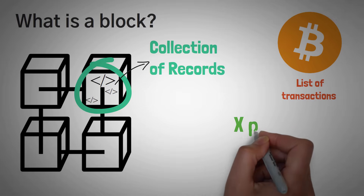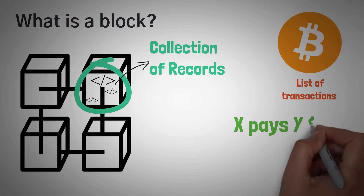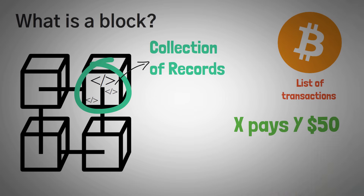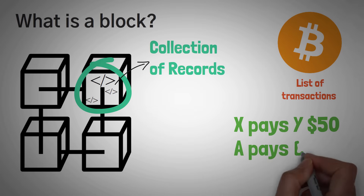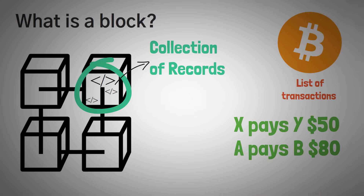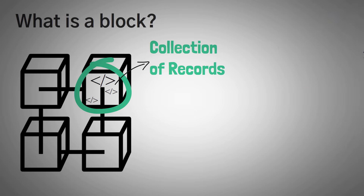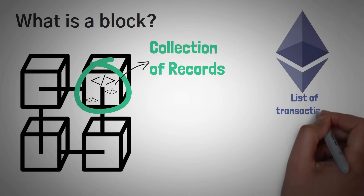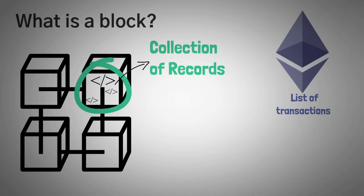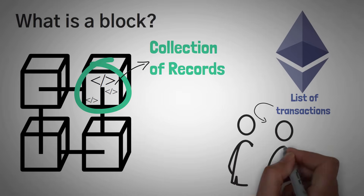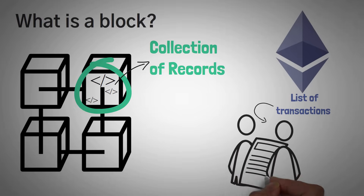For example, it might look like this: X pays Y $50, A pays B $80, and Y pays H $15. If we're dealing with Ethereum, it's usually just transactions, but it can be a few other things, like things called smart contracts, which are really neat, but we'll have time to explain them in another video.